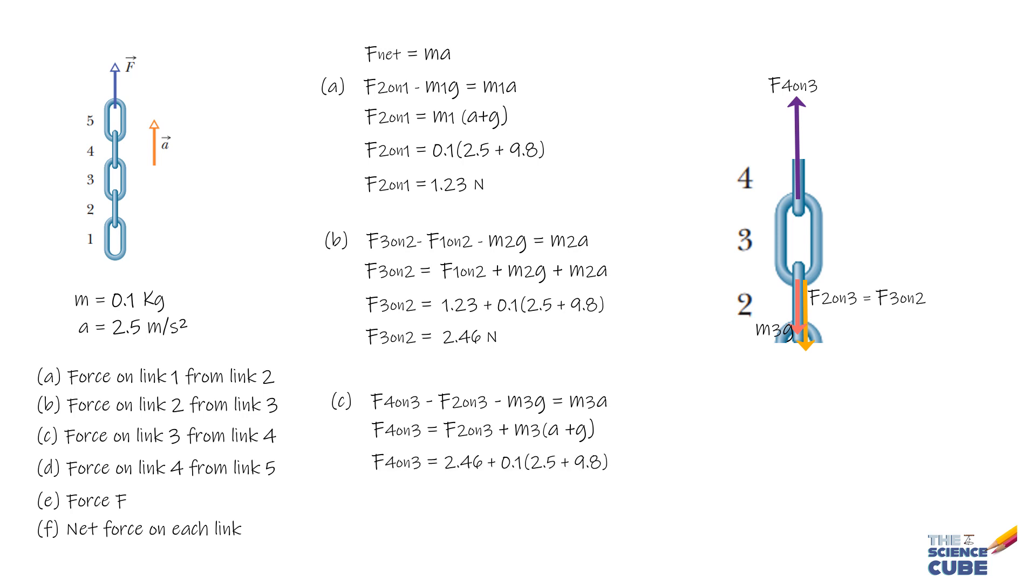We know F2 on 3 is the same as F3 on 2, which we have calculated as 2.46 Newtons, plus 0.1 times (2.5 plus 9.8), which equals 3.69 Newtons.